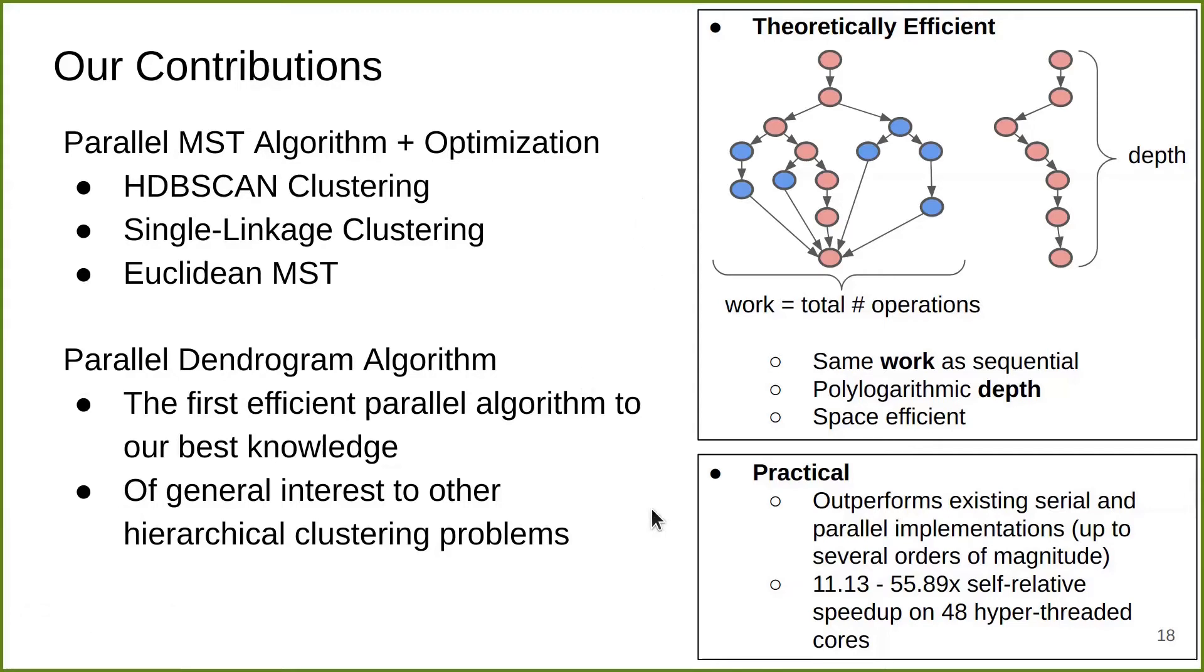All of our parallel algorithms are theoretically efficient. We use the work and depth model for parallel algorithms, where we use a directed acyclic graph to represent an algorithm. Each node represents an operation in the algorithm, and each directed edge represents a dependency. If two operations don't have any dependency between them, they can be scheduled to run in parallel. The work of the algorithm means the total number of operations, and the depth refers to the length of the longest dependency chain. Our parallel HDBSCAN algorithm does the same work as the sequential algorithm and has polylogarithmic depth. This translates directly to high parallelism in theory and high performance in practice.